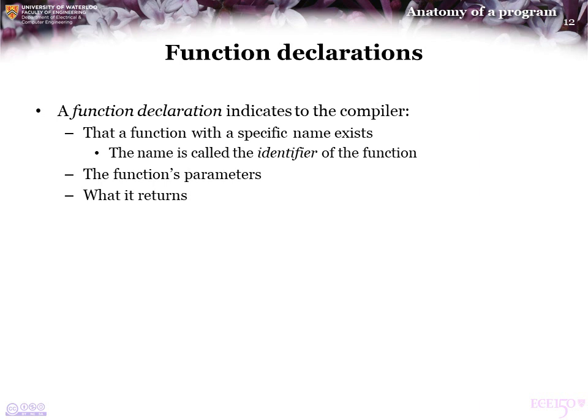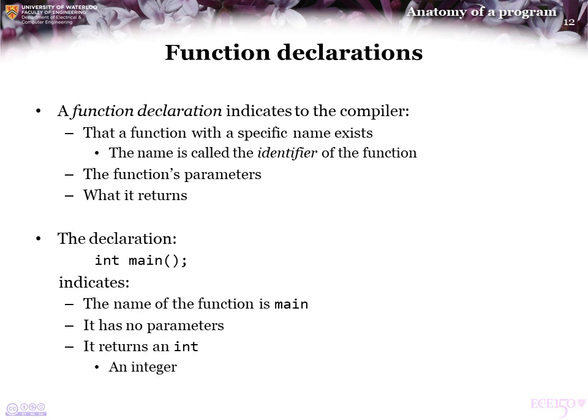The function declaration indicates to the compiler that there is going to be a function with a very specific name. The name of the function is also called the identifier of the function — this is what identifies the function and differentiates it from other functions. It also gives the function's parameters and describes what it returns. So, 'int main()' followed by a semicolon indicates that the name of the function is main, it has no parameters, and it returns an integer when it finishes executing.